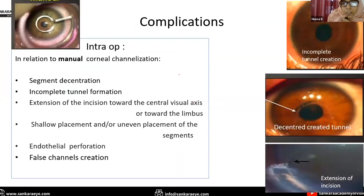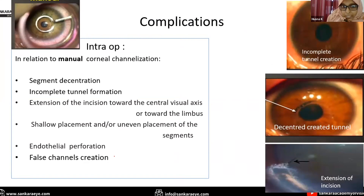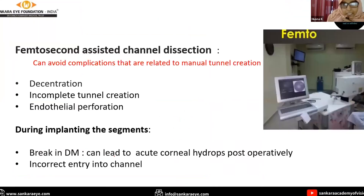Coming to complications: complications are rare but can still occur. In relation to manual corneal channel creation, there can be a chance of segment disorientation, incomplete or poorly created channels, extension of the incision towards the central visual axis or towards the limbus, endothelial perforation, and false channel creation.